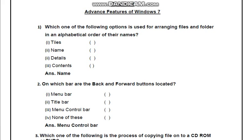Chapter 2: Advanced Features of Windows 7. Which one of the following options is used for arranging files and folders in alphabetical order of their names? Name ke according, hum kis options ke help se file or folder ko alphabetically laga sakte hain? Options: Tiles, Name, Details, Contents. Answer humara Name.